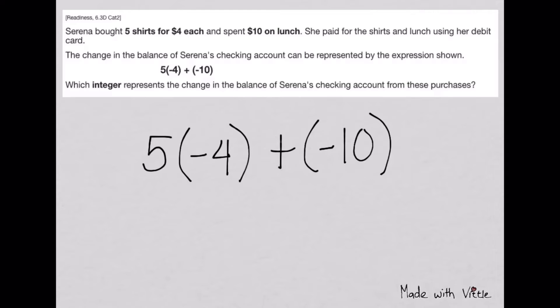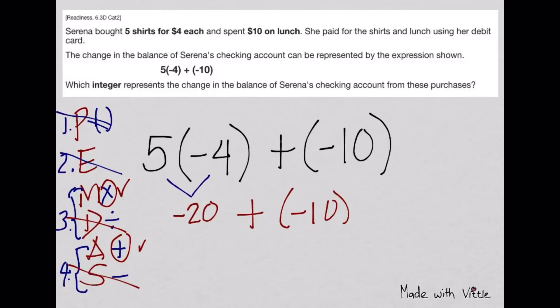Next, Serena bought five shirts for four dollars each and spent ten dollars on lunch. She paid with her debit card. The change in balance can be represented by the expression five times negative four plus negative ten. Following PEMDAS, we have to multiply first. When multiplying integers of different signs, your answer will have a negative sign. Five times four is twenty, answer is negative twenty. Now we're going to add integers. Same signs, you add and copy the same sign.